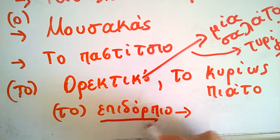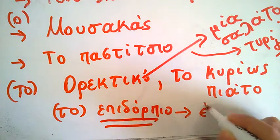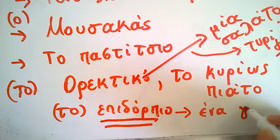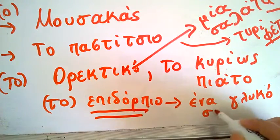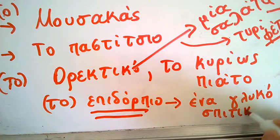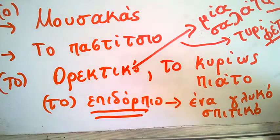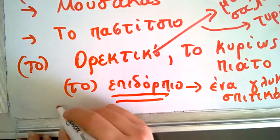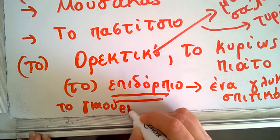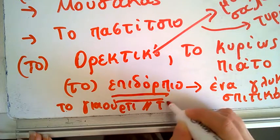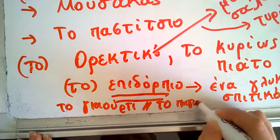To epidorpio, ena gliko, ena spitiko gliko. Homemade, spitiko, gliko. Yogurt, giaourti, to giaourti. To pagoto, the ice cream.